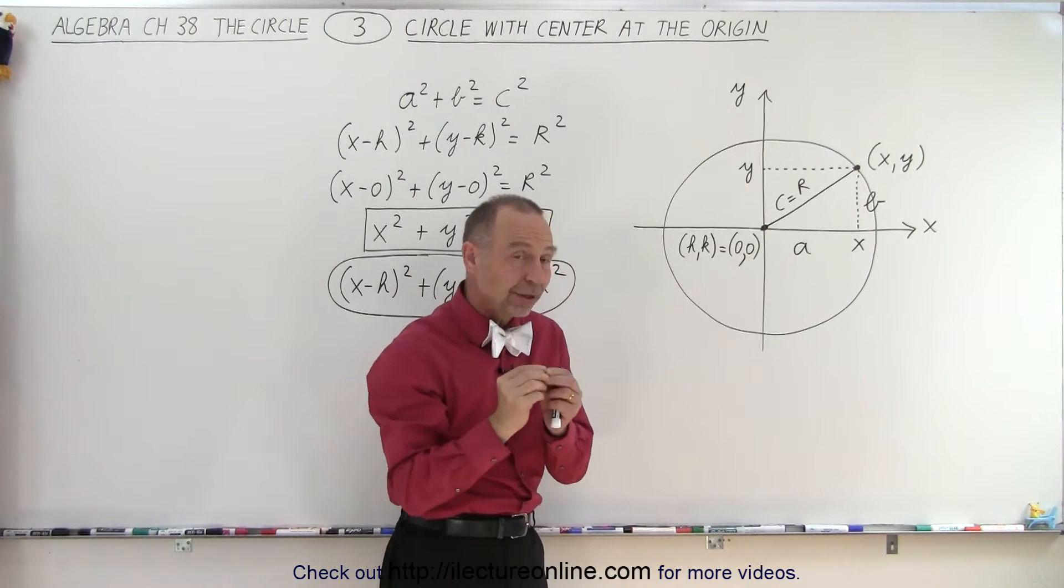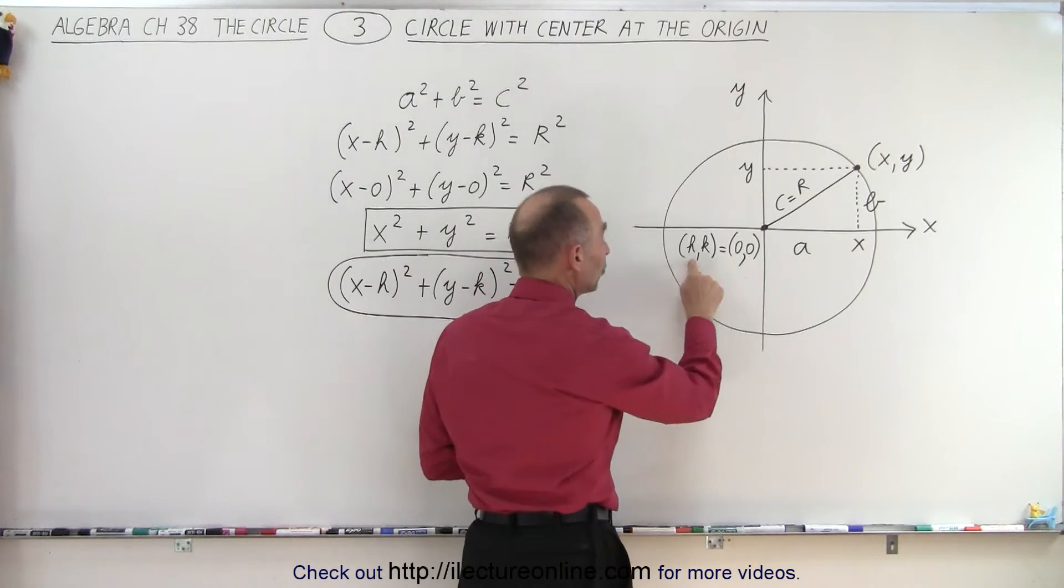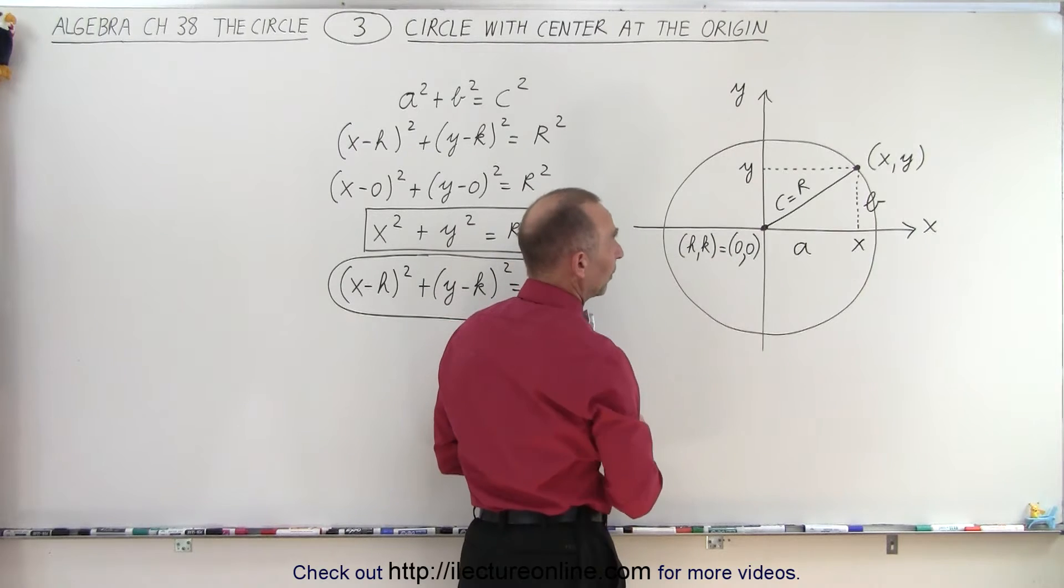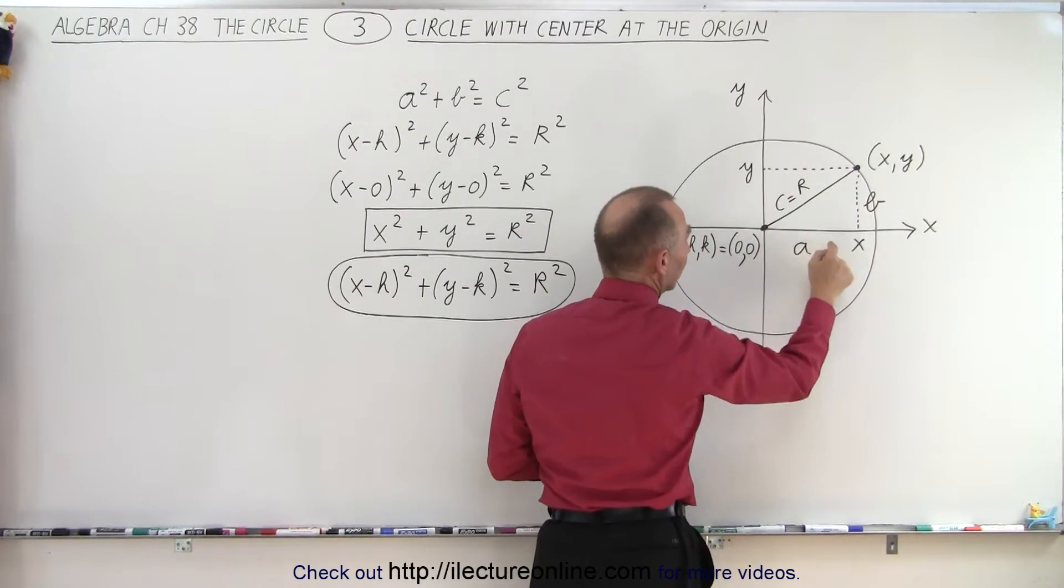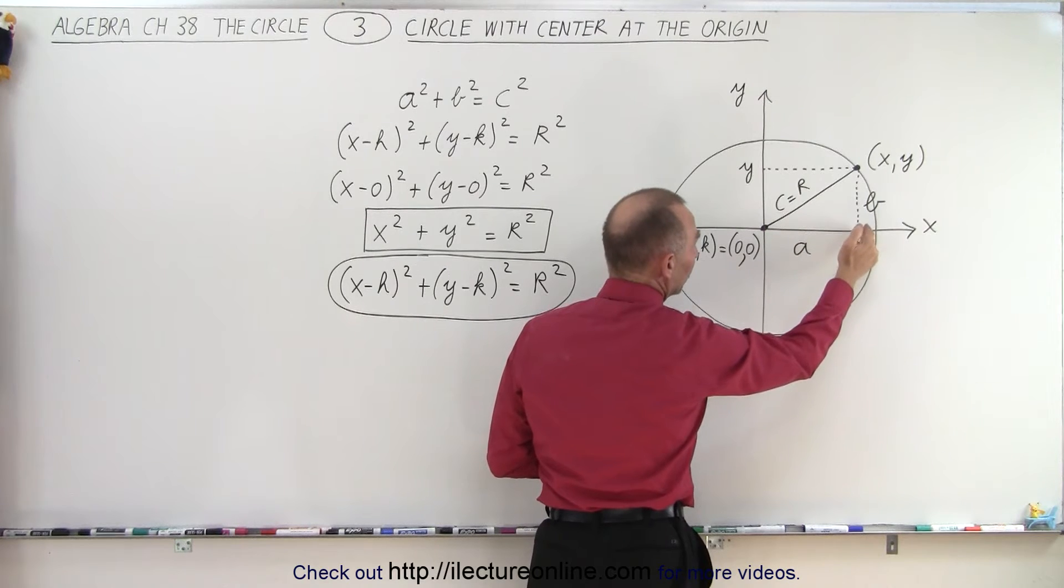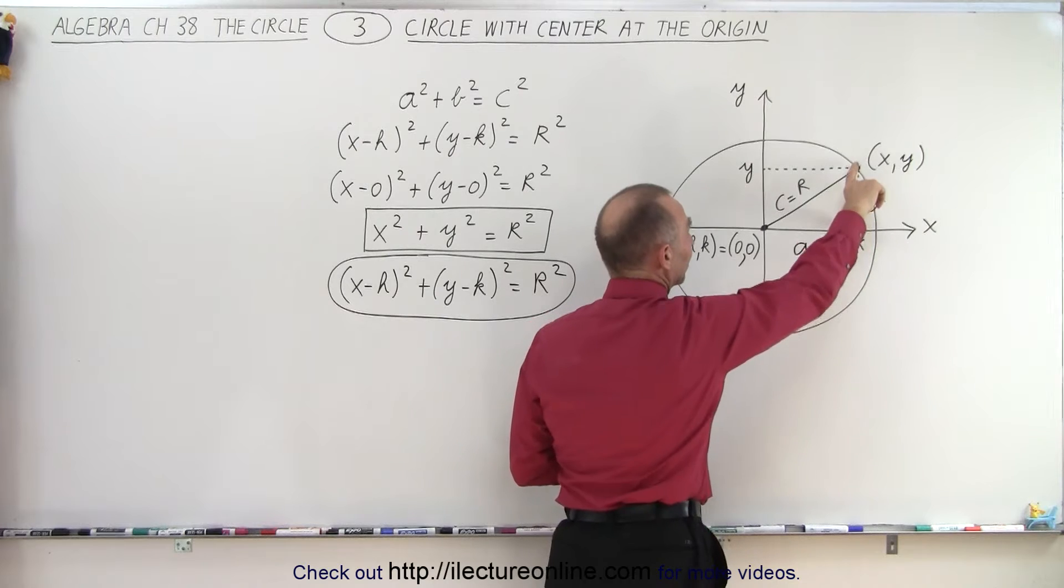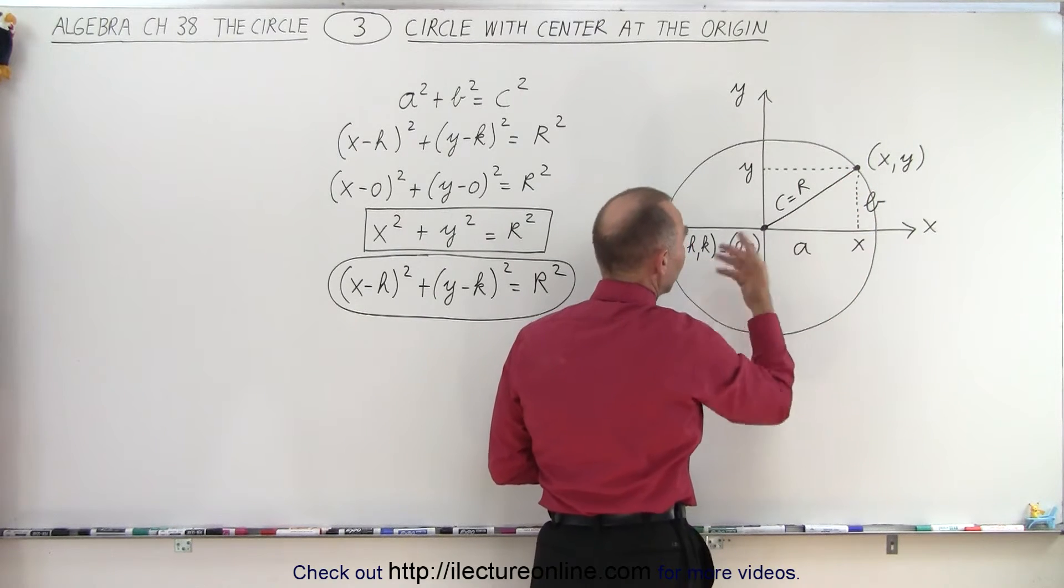But if we put the center at the origin, then h will equal zero and k will equal zero. Now side a, if we draw a little triangle, is still equal to the distance between here and here but now will be x minus zero, and over here b will be y minus zero because h and k are zero.